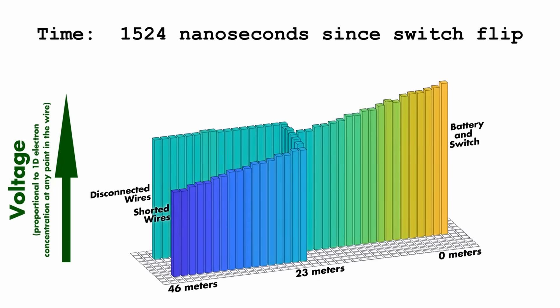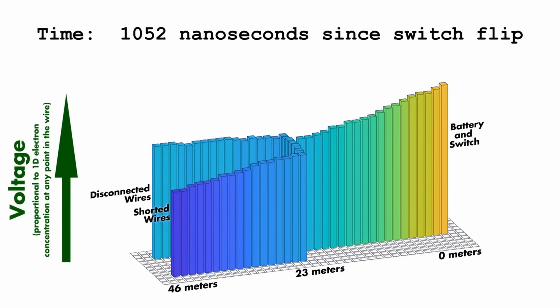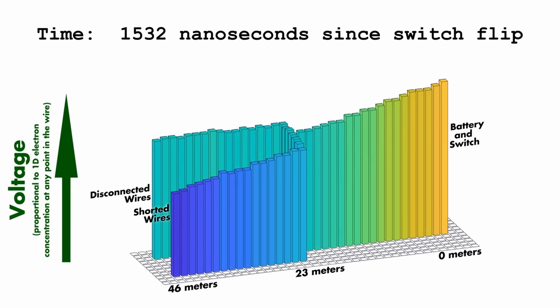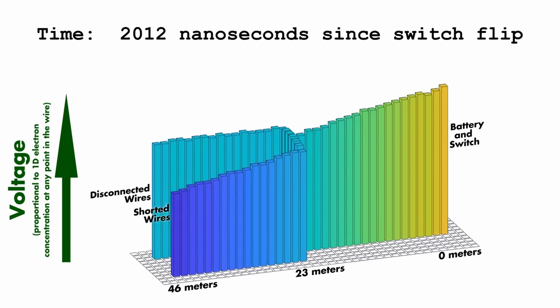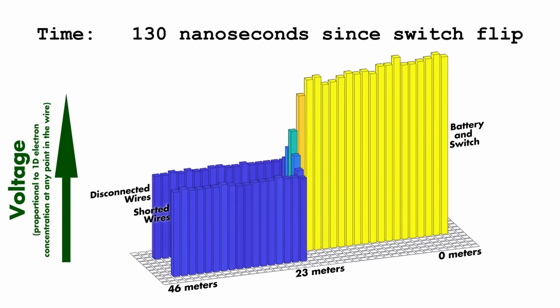Current, the actual flow of electrons, ends up following this slope as the high voltage at the battery drops to nothing at the short and in the disconnected wire where nothing should be happening there isn't a slope, no voltage to make electrons move. Until the waves actually get to the ends of the wire they look identical because these waves of current don't know what is at the end of their respective branches of the circuit.